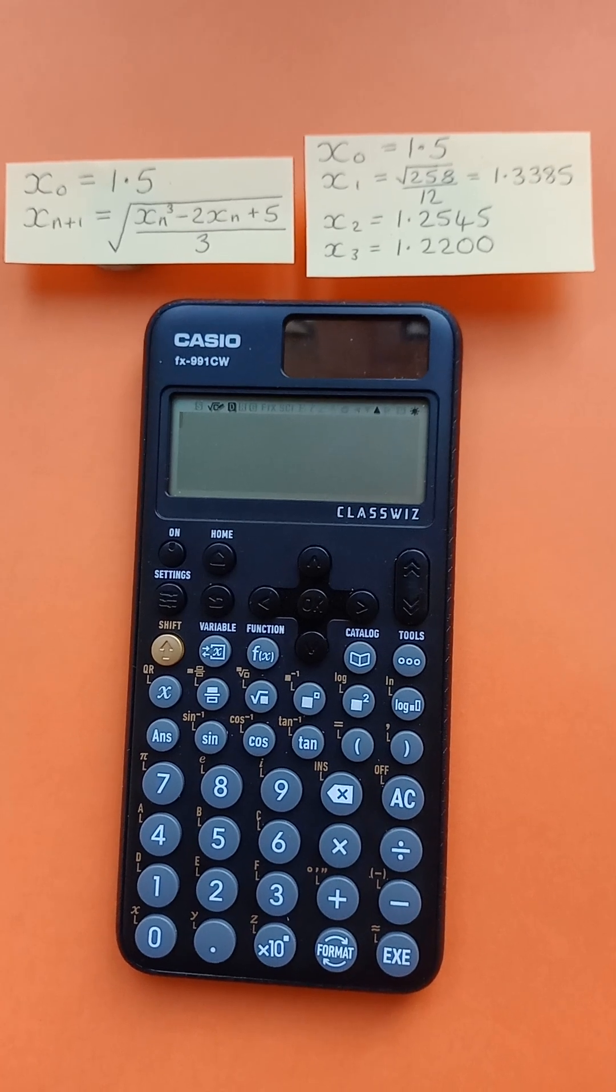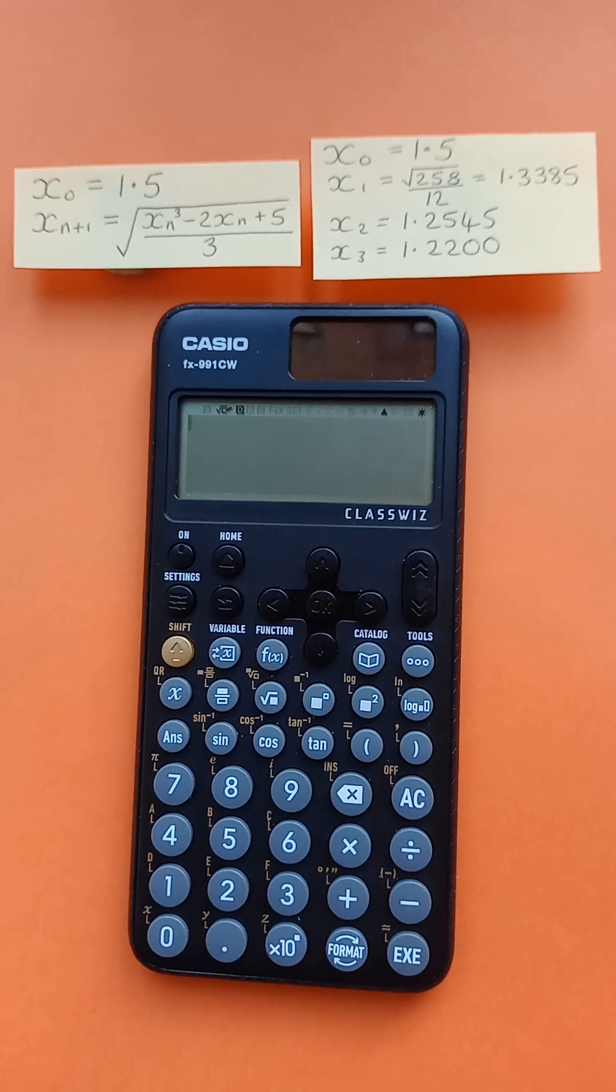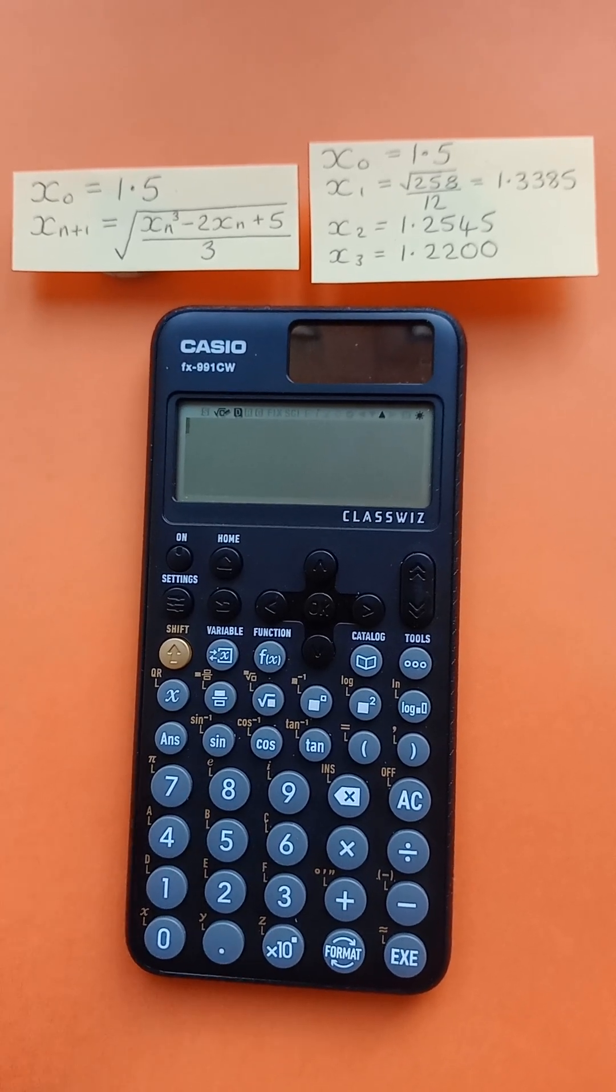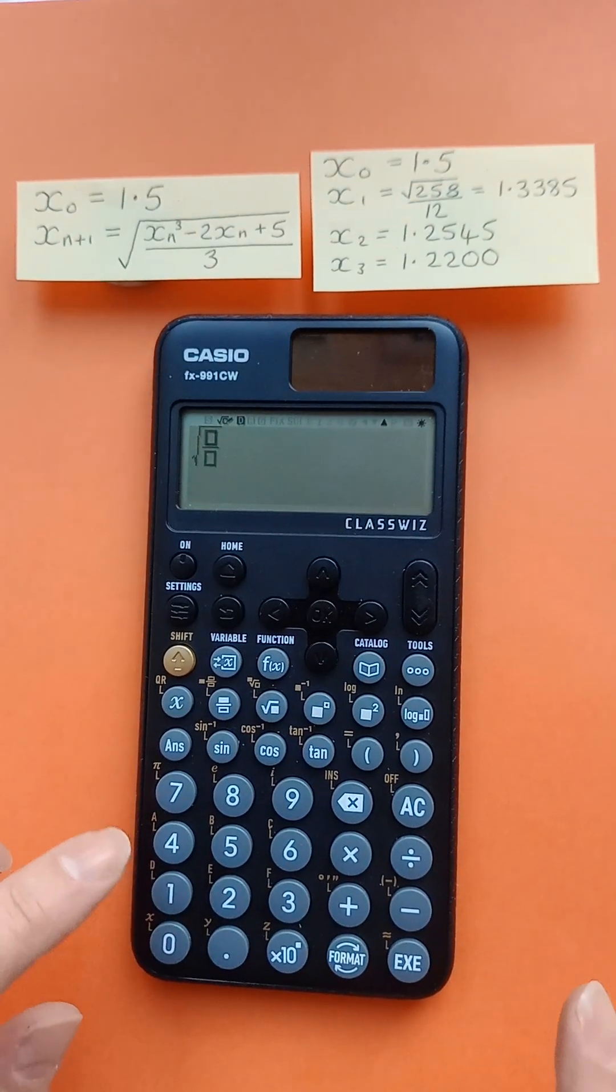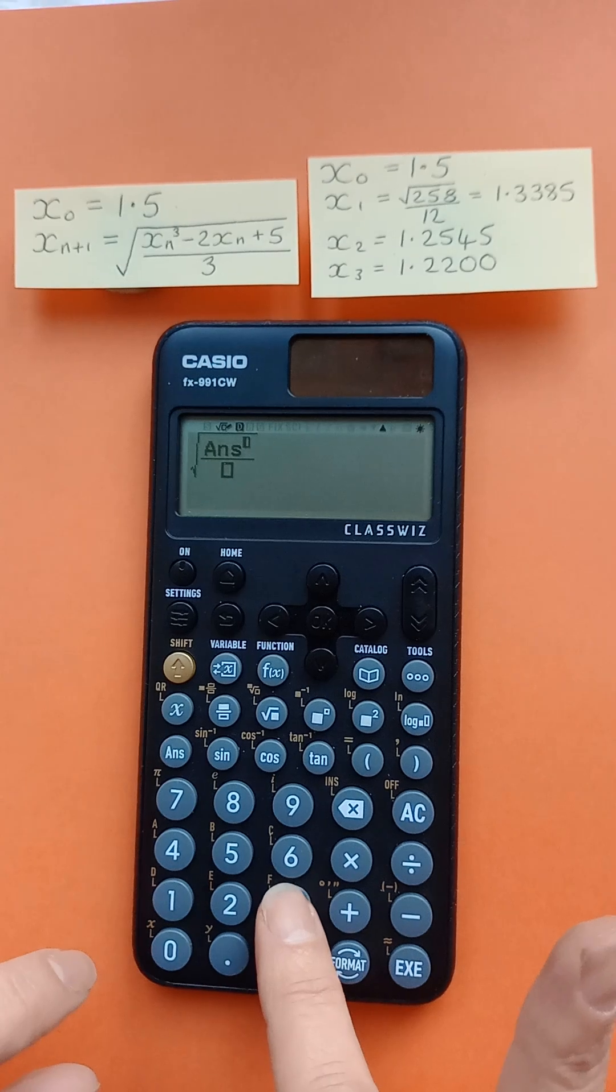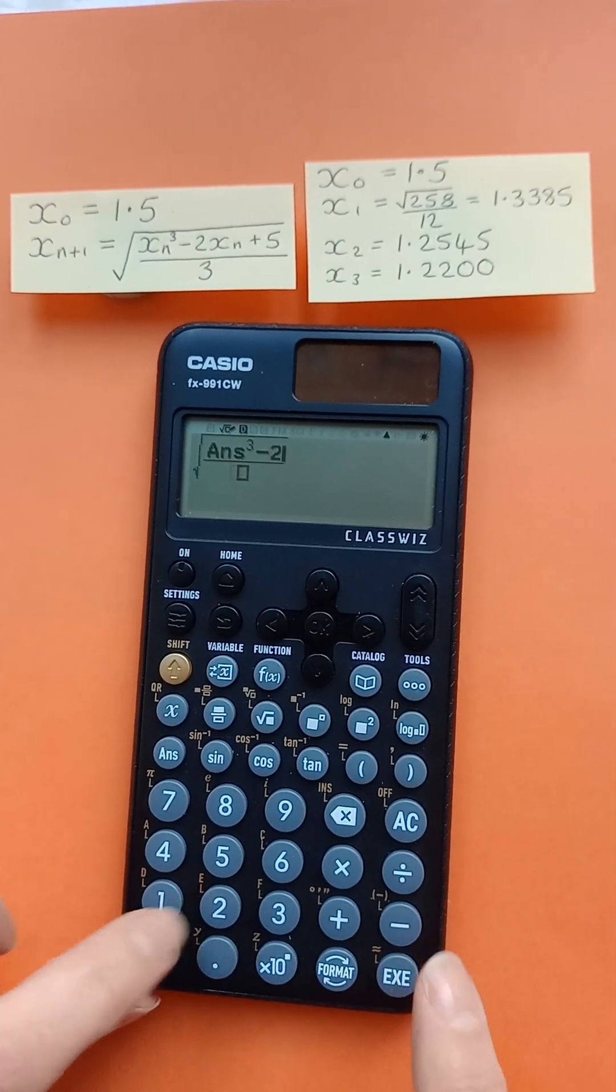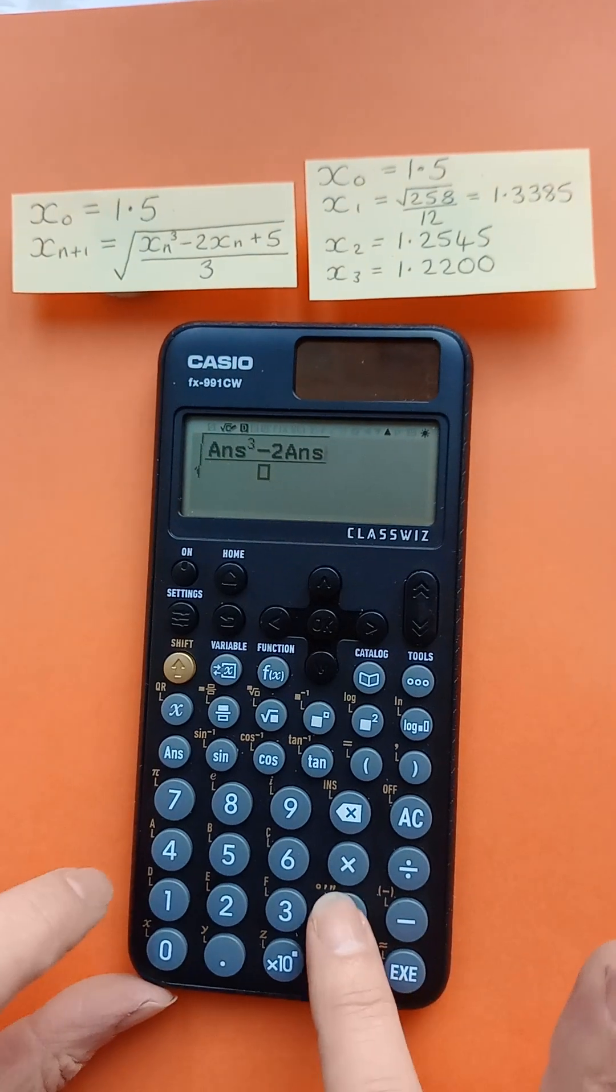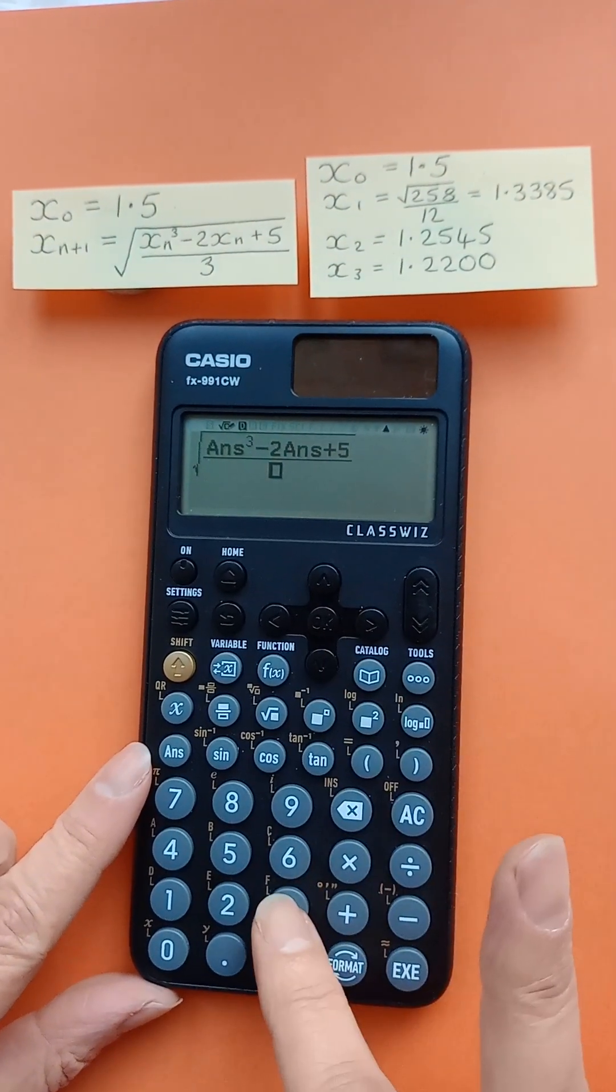Now we need to enter in the iterative formula, making sure we replace xn with answer. So square root, fraction: we've got answer to the power 3 minus 2 answer plus 5, denominator 3.